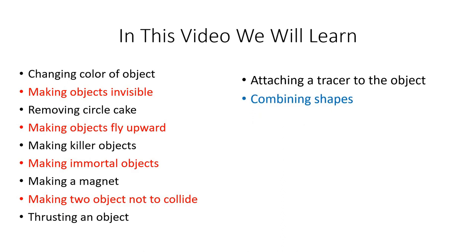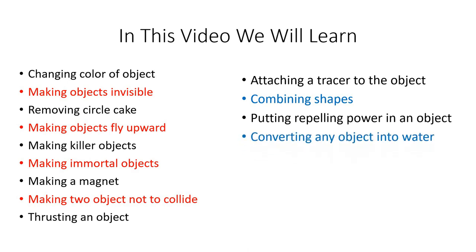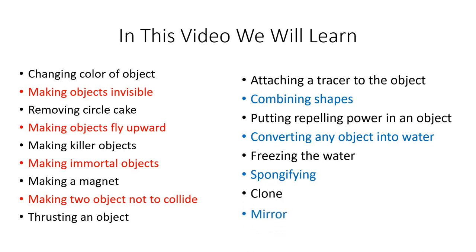Combining shapes — that's a very important topic of today's lesson. Putting repelling power in an object, which is the opposite of attraction — it will repel all objects that come near it. Converting something into water, and then how to freeze that water. Making something like a sponge, cloning an object, and making a mirror image of some object.